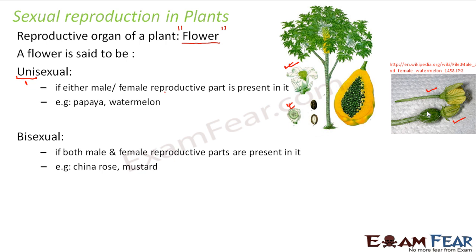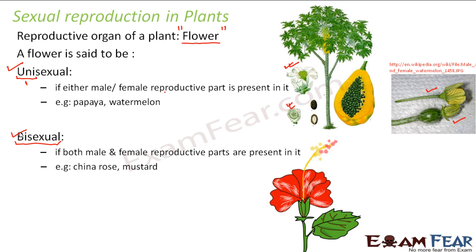On the other hand, a flower is said to be bisexual if both female and male reproductive parts are present in it, then it is called bisexual. Examples of such plants would be china rose and mustard. If you look at a china rose flower very closely, you will be able to see that it contains both the male reproductive part and the female reproductive part. That means in the same flower, the male gametes as well as the female gametes will be produced.